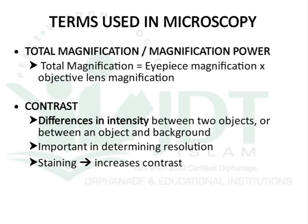The next term is total magnification or magnification power. It is the magnification power of a microscope, which is equal to the magnification power of the eyepiece multiplied by the objective lens magnification power. It is not the sum of eyepiece magnification plus objective — it is the multiplication of eyepiece magnification and objective lens magnification.